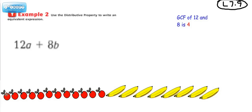So 12A might be 12 apples, and 8B might be 8 bananas — so we're combining these two things. The first step, if they're asking you to use the distributive property to rewrite the expression, is to find the GCF of the coefficients.